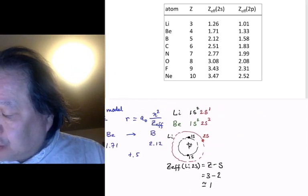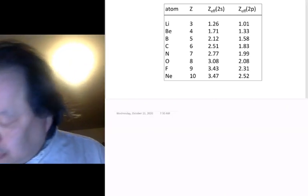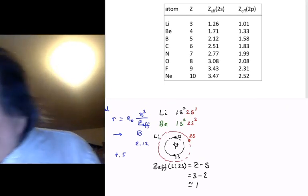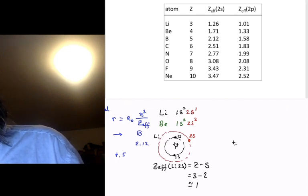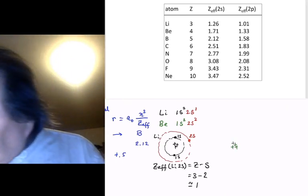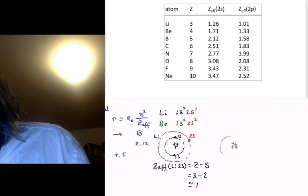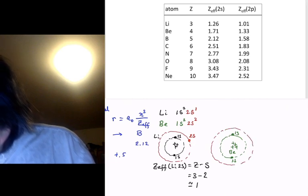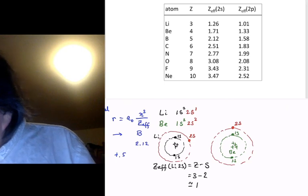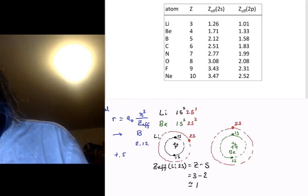Now let's compare that to what we get for beryllium. In beryllium's case, here's beryllium. Beryllium has 4 protons in the center. We again have the 2 1S electrons. But now in the second shell, we have 2 2S electrons. I'll put one in red and the other one I'll make purple.